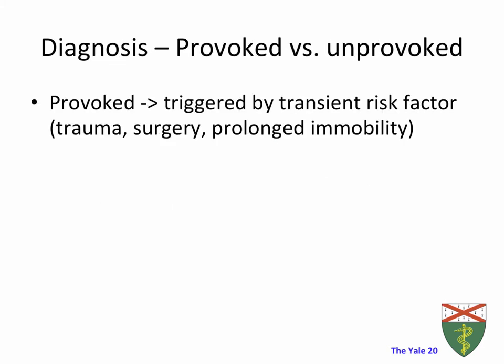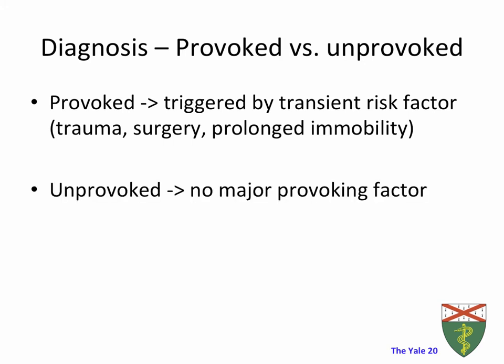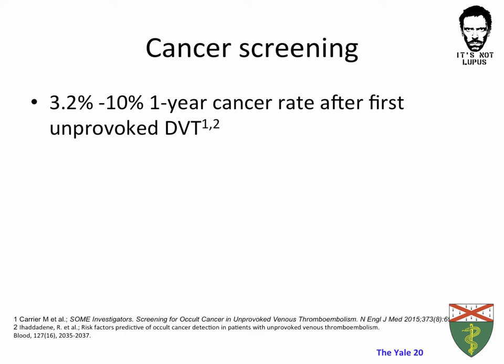One of the key determinations when approaching a patient with DVT is whether that DVT is provoked or unprovoked. Provoked means the DVT is triggered by a transient risk factor like trauma, surgery, or prolonged immobility, while unprovoked DVT means there is no major provoking factor. Distinguishing between provoked and unprovoked is important for management, as provoked DVTs require a shorter period of anticoagulation. A separate category is DVT associated with malignancy. Several studies have shown that an unprovoked DVT could be the first indicator of an underlying malignancy, with a one-year cancer detection rate of up to 10%.